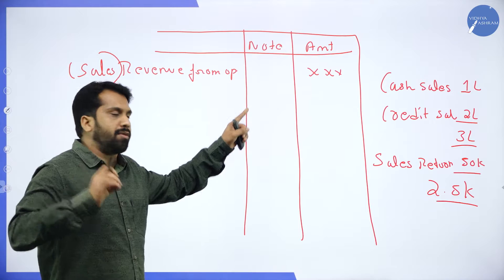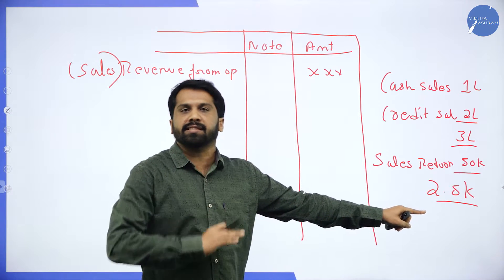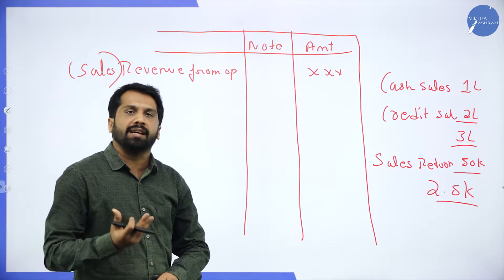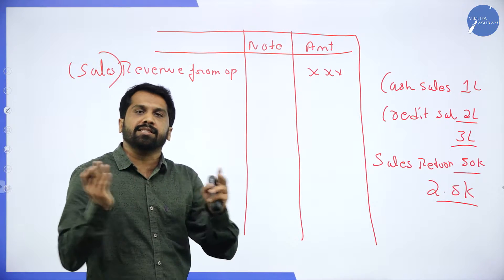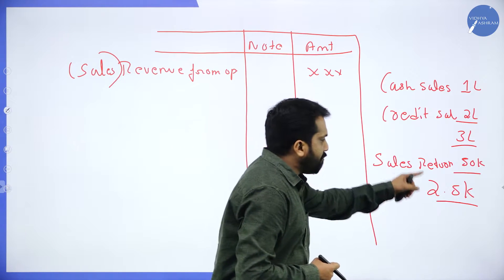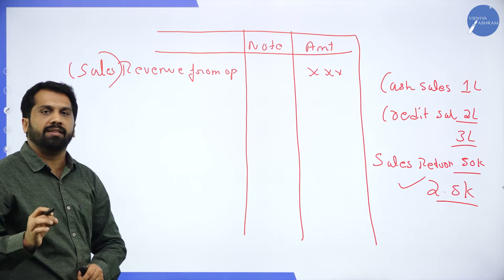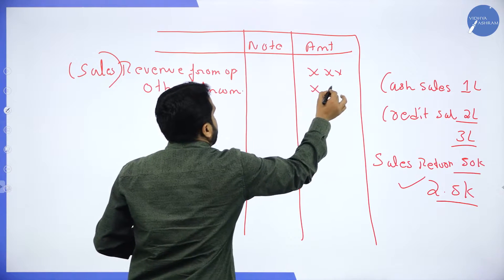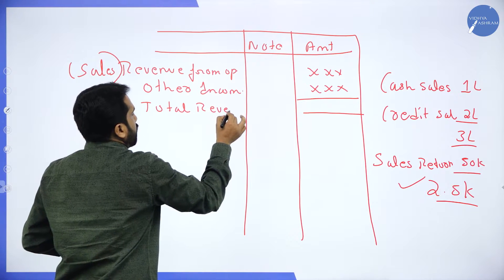Some problems give Revenue from Operations directly as 2.5 lakh, or they give Sales as 2.5 lakh — both are the same. Some problems give adjustments: Cash Sales and Credit Sales we should add, then subtract Sales Return. Your final answer is 2.5 lakh as Revenue from Operations. After that, Other Income — if we have any other income, we should add it to get Total Revenue.